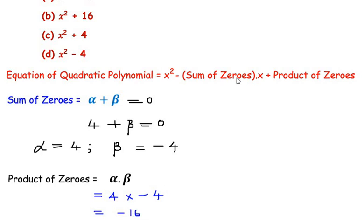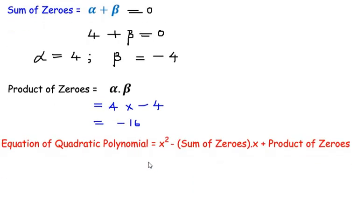So now we have the sum of zeros as 0 and we have got the product of zeros as negative 16. So we have to simply substitute sum of zeros and product of zeros in this equation of quadratic polynomial. So let me write here. We are going to write x squared as it is minus sum of zeros was given as 0, so 0 times x, and product of zeros we got it as negative 16.